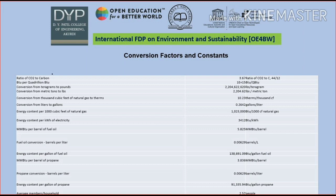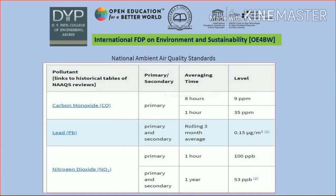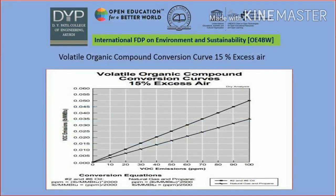We can discuss, calculate, and see the emission calculator for this. Using simulation techniques, we look at national ambient air quality standards (NAAQS) for carbon dioxide, carbon monoxides, lead, and nitrogen dioxide. The levels and average times are given in this slide.